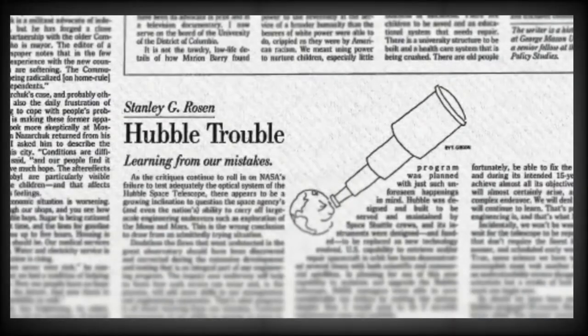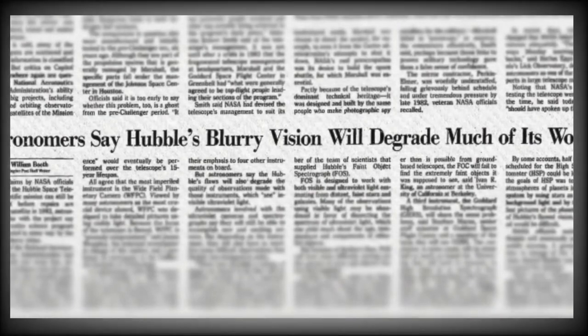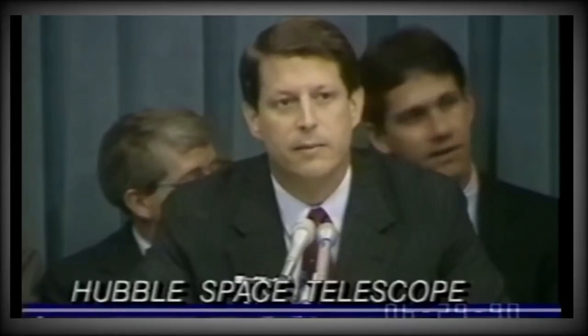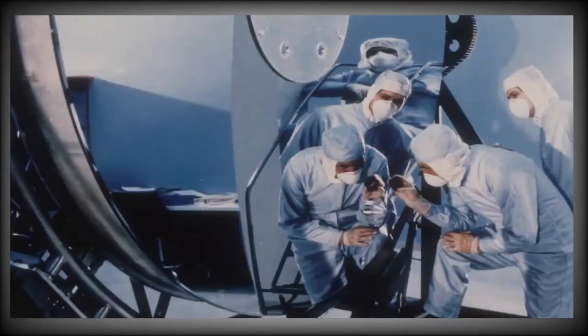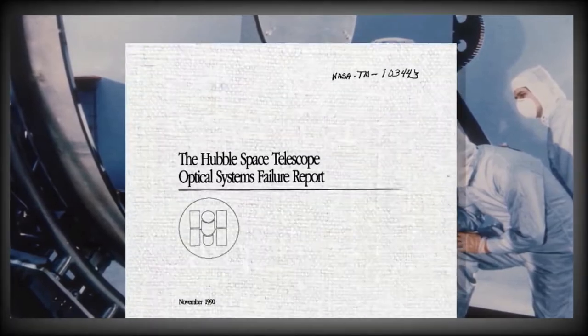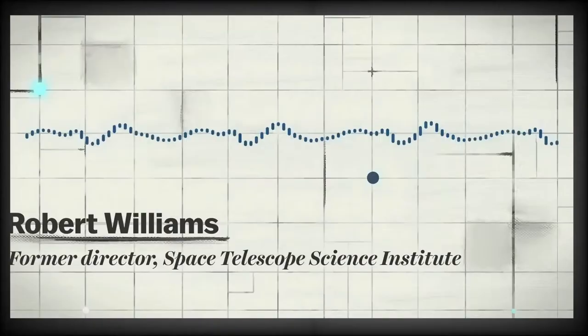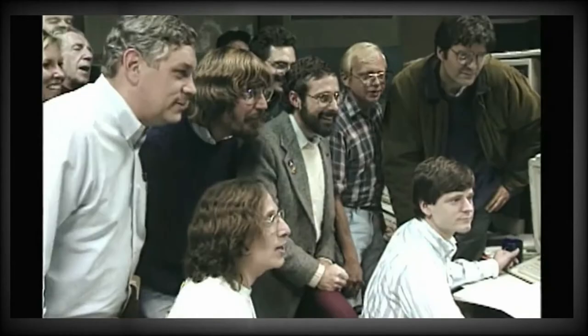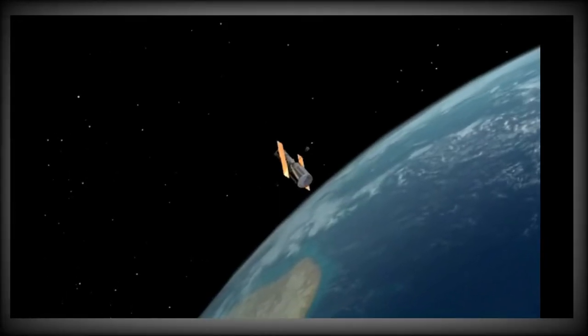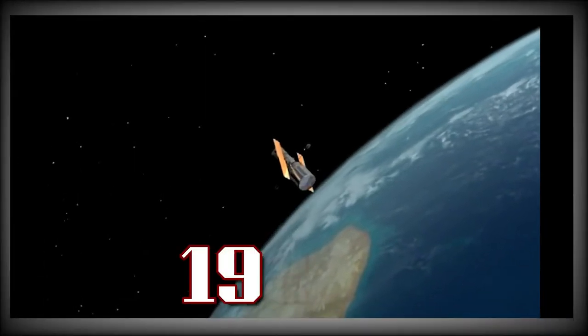The new Hubble Space Telescope data analysis continues the observatory's long-running quest to comprehend how quickly the universe expands and how fast that expansion is accelerating. The number used by astronomers to measure this expansion is known as the Hubble Constant, not after the telescope, but after astronomer Edwin Hubble, who was the first to measure it in 1929.